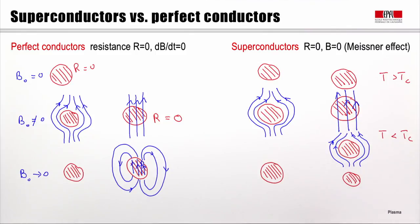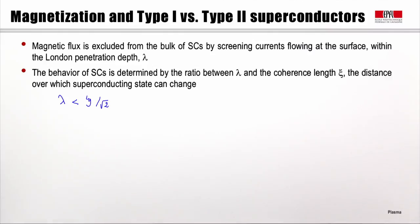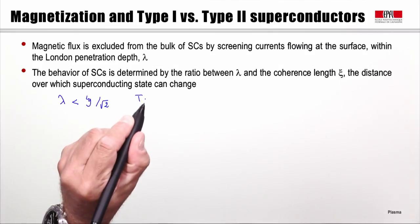The magnetic flux is excluded from the bulk of the superconducting material by screening currents flowing at the surface, within a certain penetration depth called the London penetration depth λ. The behavior is determined by the ratio between λ and the coherence length ξ — the distance over which the superconducting state can change. This ratio defines type 1 and type 2 superconductivity. In type 1, λ is smaller than ξ/√2.